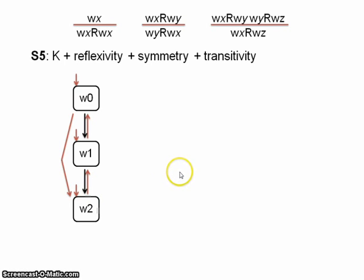But since we've got W0 accessing W2, we now know, due to symmetry, that W2 must access W0, right? Because we've got symmetry. W0 accesses W2, so W2 must access W0.